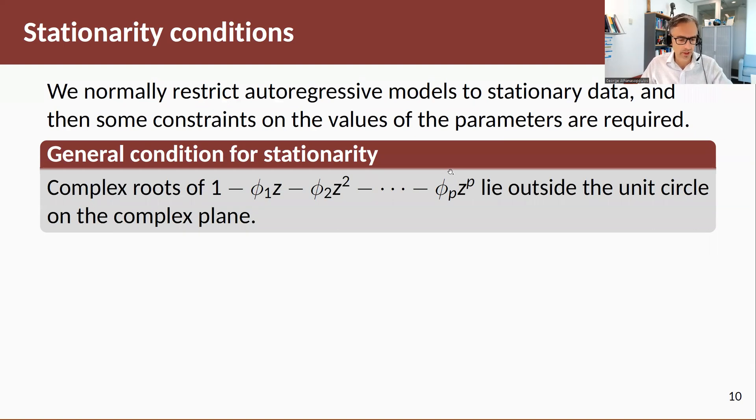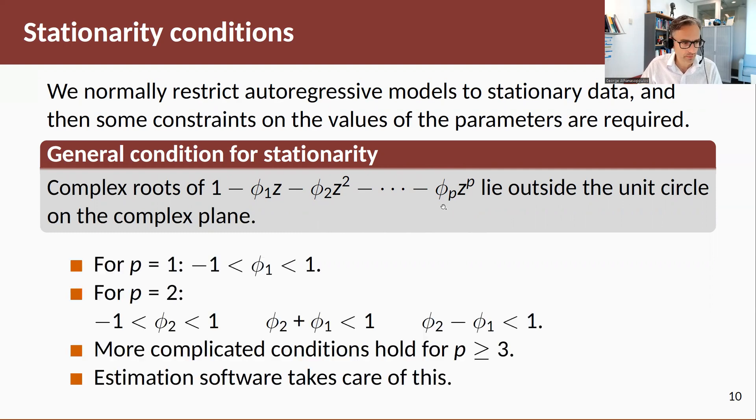We normally restrict our autoregressive models to stationary data, and then some constraints on the parameters are required. The general condition for stationarity is that the complex roots of 1 minus phi_1 z minus phi_2 z squared minus... minus phi_p z to the p lie outside the unit circle on the complex plane.